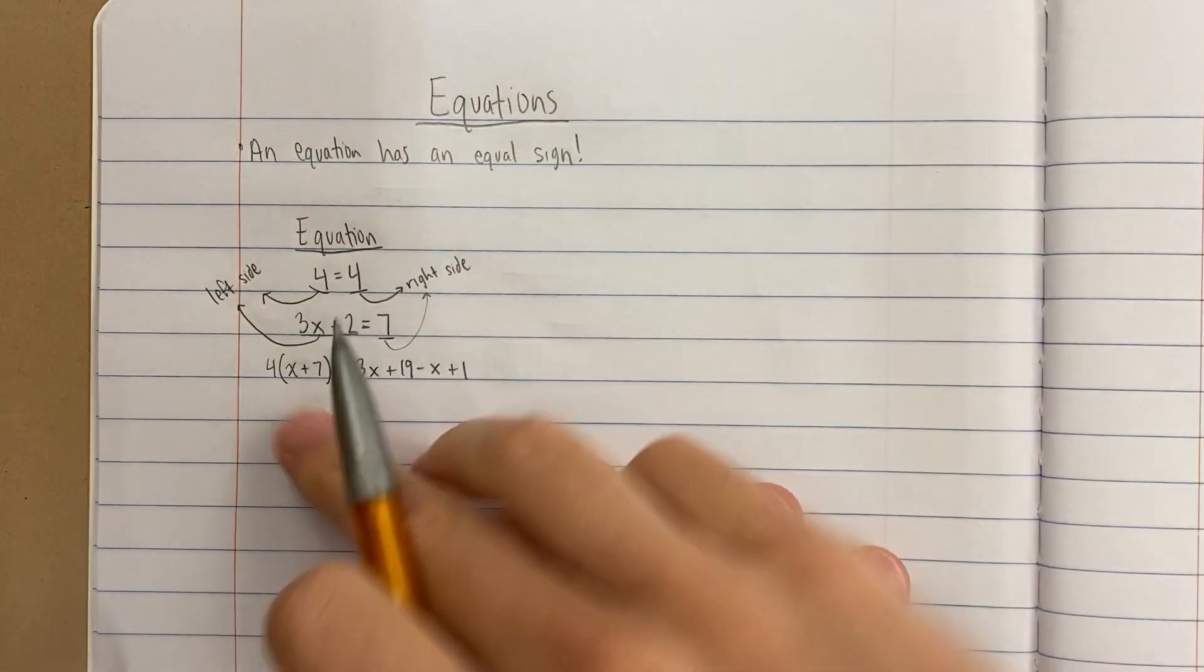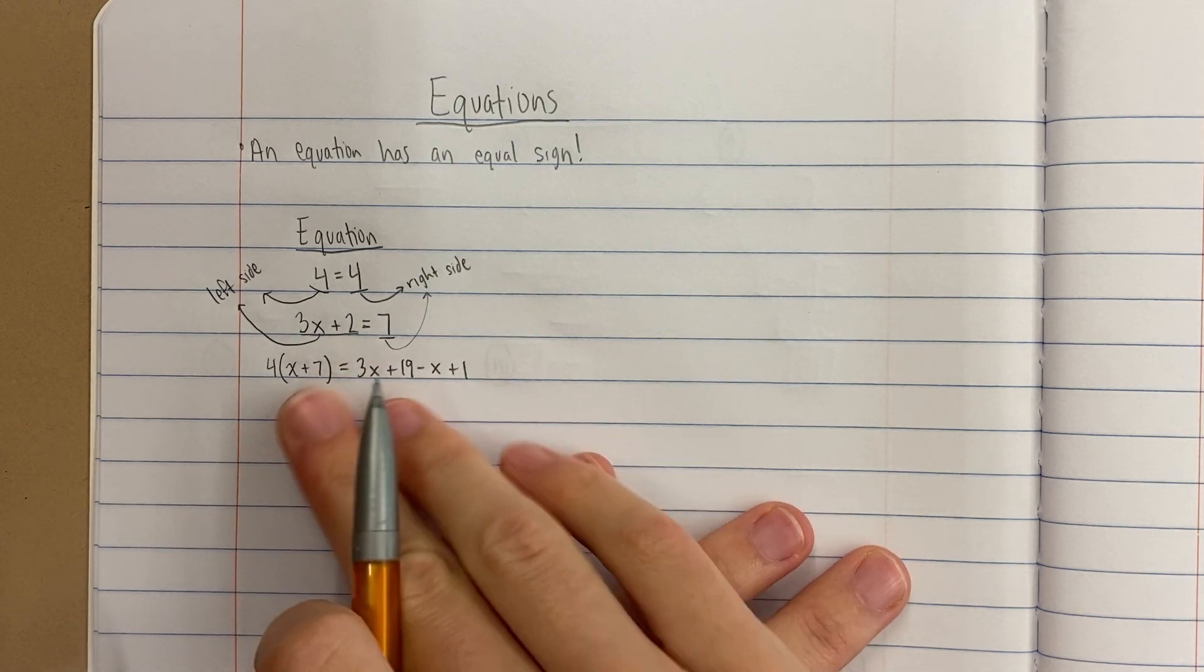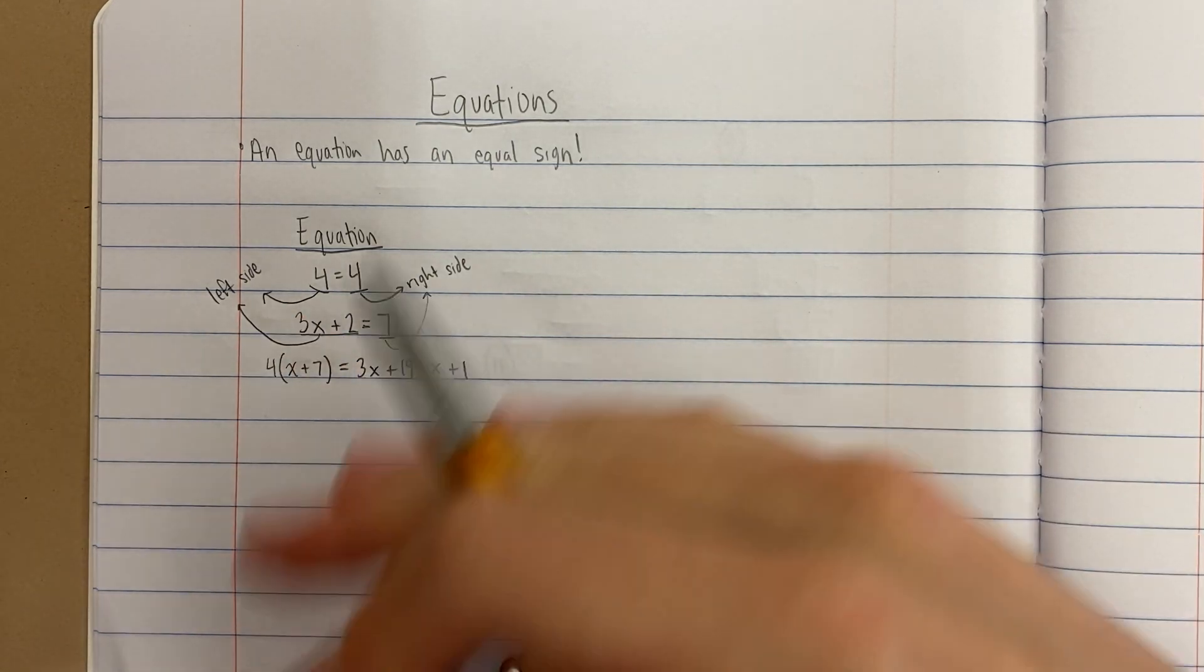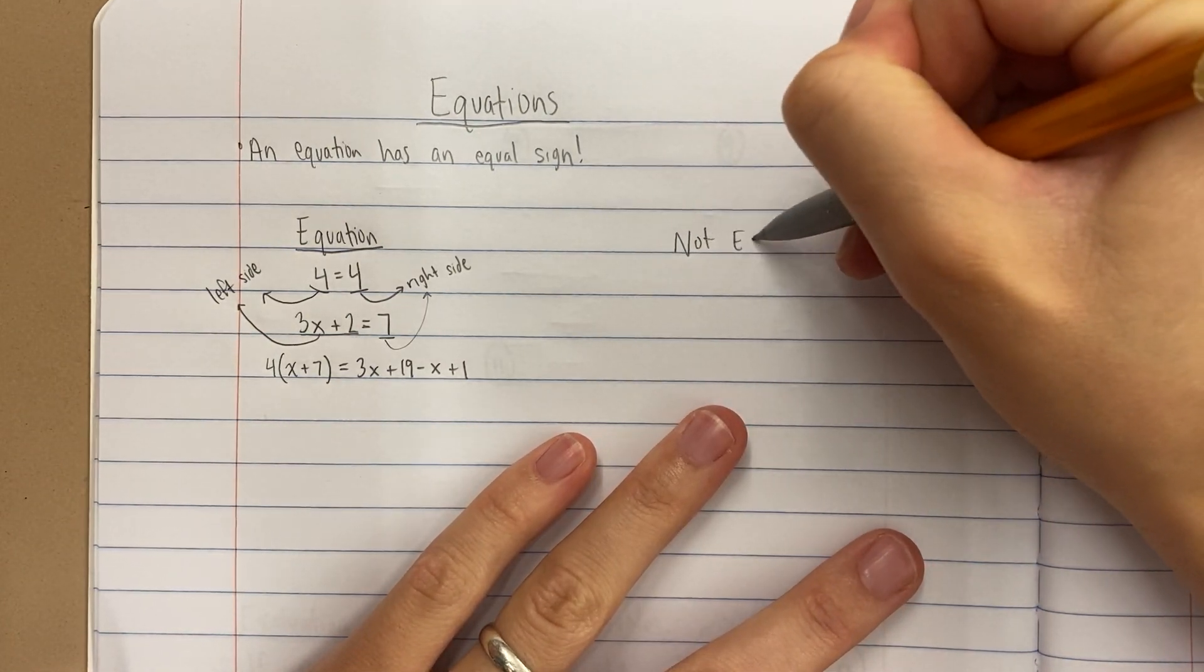So that's what an equation is. Equations always have a left side and a right side, and it's important that you're familiar with that because especially in distance learning as we talk about things, the left side equation, right side, and we always do the same thing to both sides. We'll learn that soon.